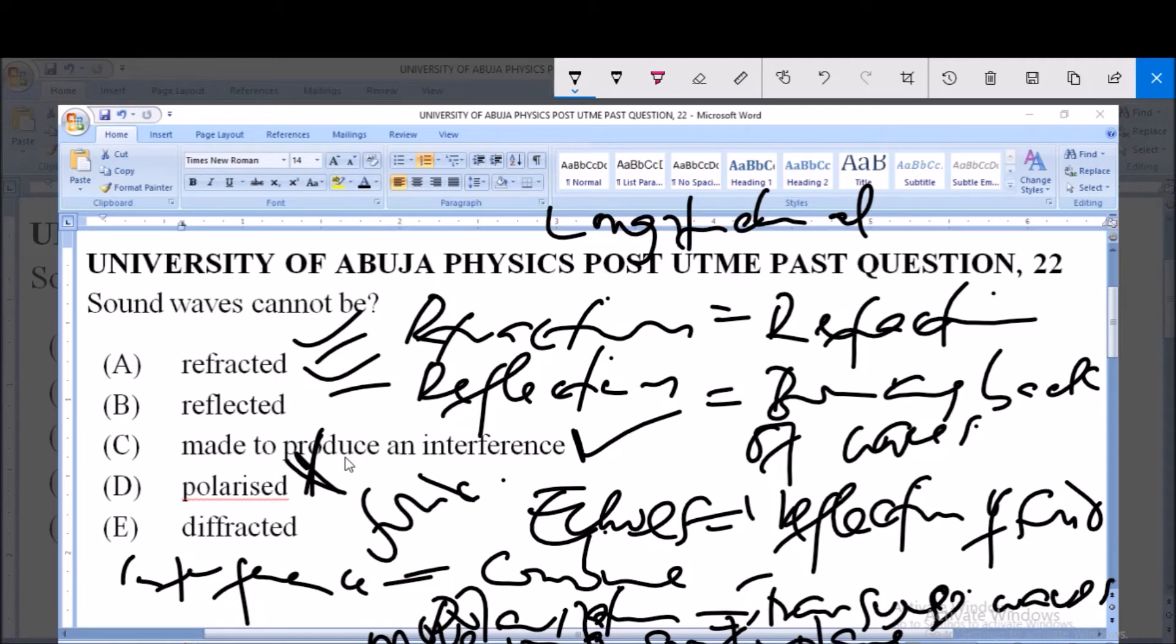Most of the electromagnetic waves we know are transverse waves, so they can actually be polarized. E, diffracted. Diffraction refers to the bending of waves around obstacles. The bending of waves around obstacles is diffraction of that wave. The movement of waves through an aperture or a small opening.